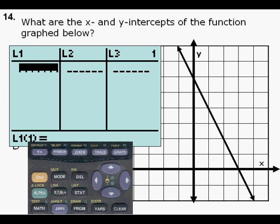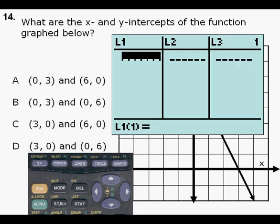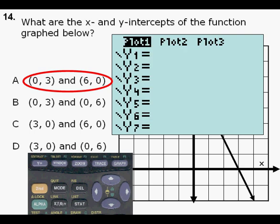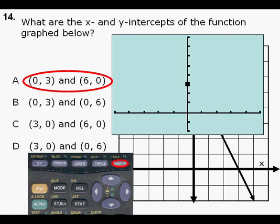After we've done that, we can go to stat, enter, and we can enter that first point there: (0, 3) and (6, 0). After we do that, we go back to y equals, make sure plot 1 is turned on, and we graph it. We see, well, we don't see that x intercept there at x equals 3, so we know that cannot be right, so we cross it off.